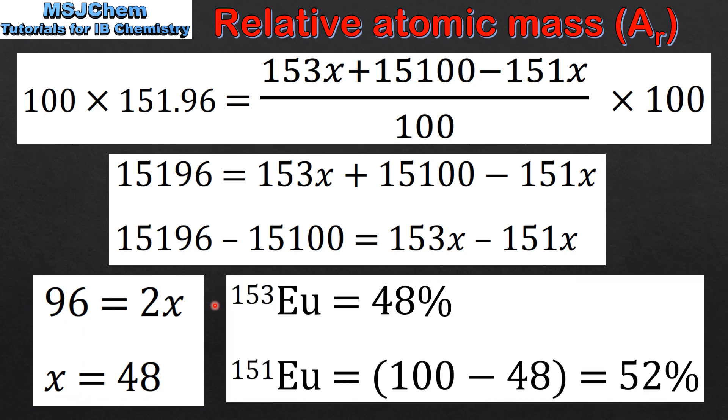And finally we can calculate the percentage abundance of each isotope. For Eu-153 the percentage abundance is 48%, and for Eu-151 it's 100 minus 48, which gives us 52%.